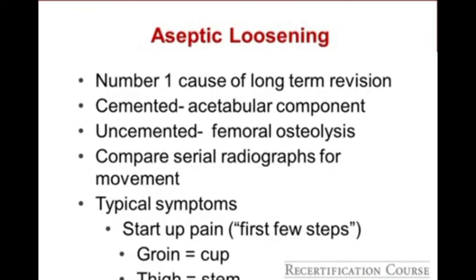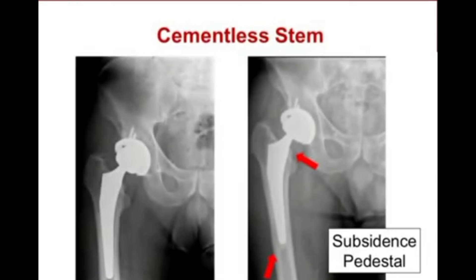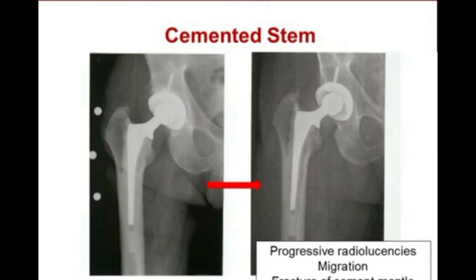Aseptic loosening remains the number one cause of long-term revision of total hip arthroplasty. Cemented cups tend to fail at a higher rate than cementless implants. The typical symptoms of a loose implant are start-up pain — pain with the first few steps that tends to improve. Start-up pain in the groin typically suggests a cup problem; start-up pain in the thigh suggests a loose stem. With a cementless stem, look for subsidence on X-ray. A pedestal is also likely representative of a loose implant. For a cemented stem, progressive radiolucencies, migration, and fracture of the cement mantle are hallmarks of loosening.